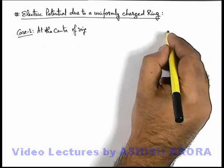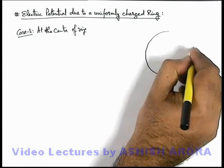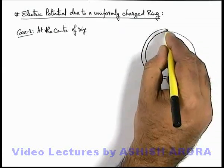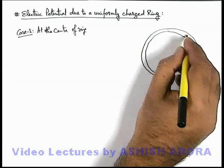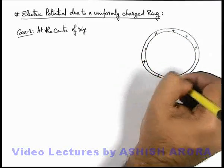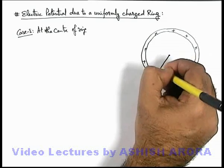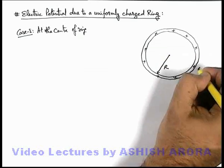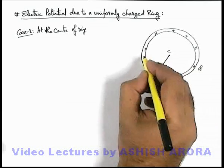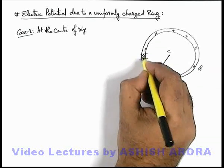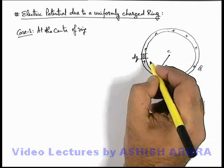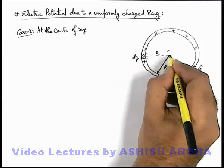We are given a uniformly charged circular ring which is charged with total charge q on its periphery. If the ring is of radius r with total charge q, to find the electric potential at the center we first consider an elemental charge dq on the circumference, which is located at a distance r from center C.